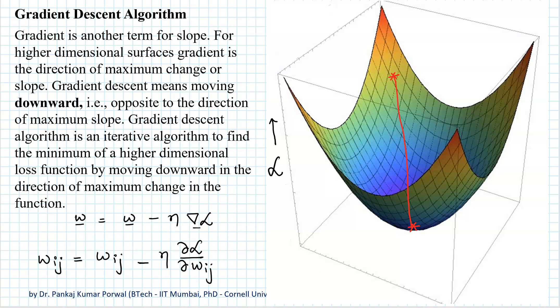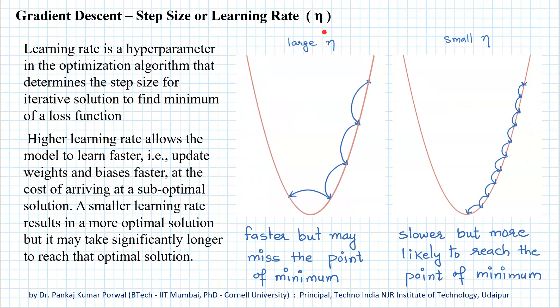The learning rate η is our choice of step size as we move from the initial point to the minimum. If η is large, we move in large steps and reach the minimum faster, but we may overshoot and miss it. If η is small, the approach towards the minimum is much slower, but it is more likely that we will actually reach it. There is always a trade-off between a large and small learning rate.